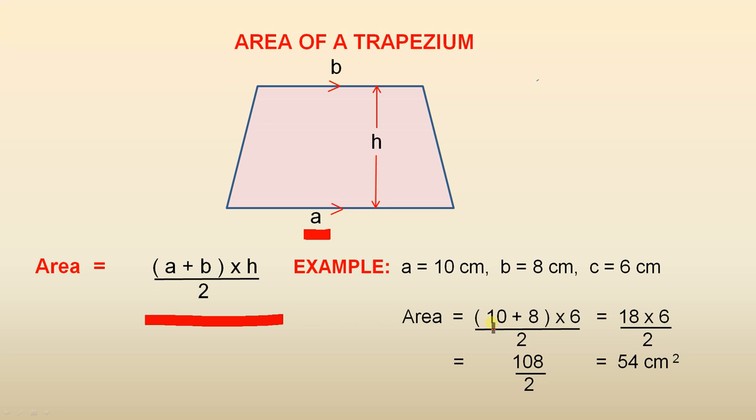The area is 10 plus 8, so you add the two parallel sides together, multiply it by 6. 10 plus 8, there's your 18, times 6 over 2. 18 times 6 is 108, divided by 2, and the answer is 54 square centimeters.